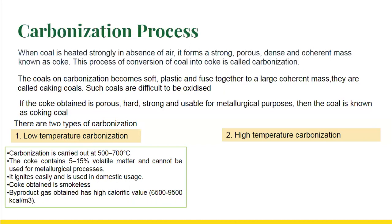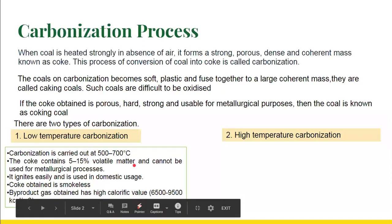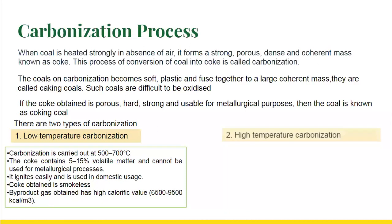Low temperature carbonization contains 5 to 15 percent volatile matter and cannot be used for metallurgical processes. However, it ignites easily and is used for domestic purposes. The coke obtained is more dense and the byproduct gas has a high calorific value of 6,500 to 9,500 kilocalories per cubic meter, but it is not suitable for metallurgical processes.